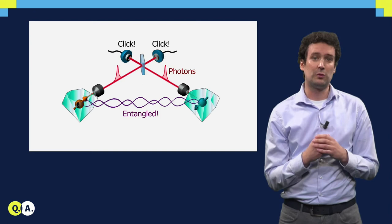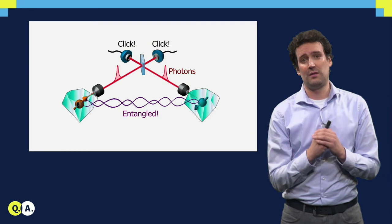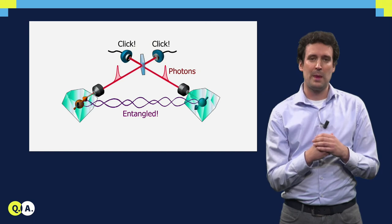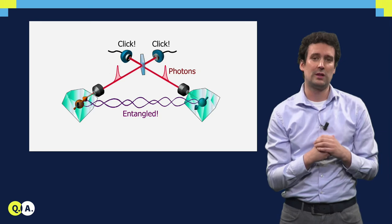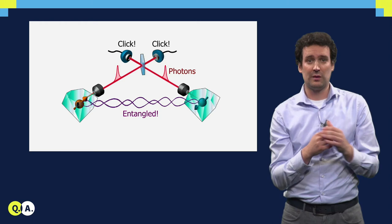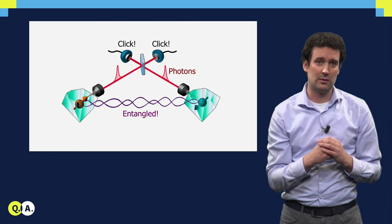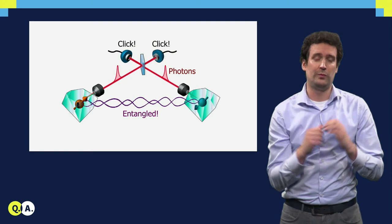So how do we link these NV centers together into a network? For that we use photons. Consider two NV centers in two different diamonds. We first make each of these NV centers emit a photon that is entangled with the spin state, and then we take these two photons and bring them together on a beam splitter. After this beam splitter, it is fundamentally impossible to tell which photon came from which NV center. This means that if the detectors behind the beam splitter register a certain pattern of photons, then we know that one of the NV centers is pointing up and the other one is pointing down. And because we fundamentally cannot know which one is up and which one is down, quantum mechanics tells us that we have created an entangled state between two distant NV centers.